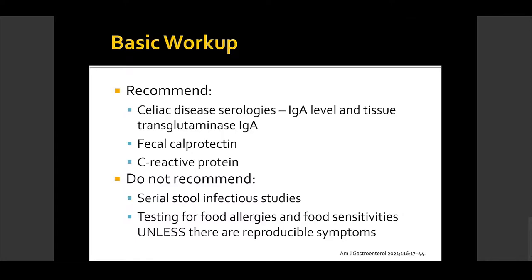Based on results of fecal calprotectin, CRP, and growth parameters, we decide whether to proceed with endoscopy and colonoscopy. For most patients referred with suspected functional GI disorders, we perform this testing, and if negative, we provide family reassurance and start therapy involving diet, psychological support, and perhaps medications. If there's no change, or if there are concerns about weight gain, we proceed to endoscopic evaluation.